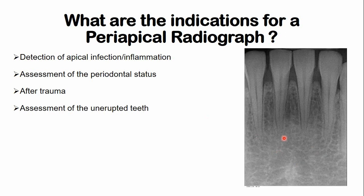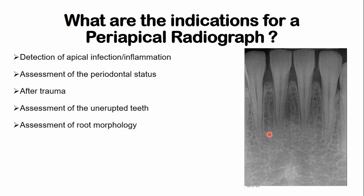Sometimes there are unerupted teeth within the bone, so it is also used for the initial assessment of unerupted teeth. Assessment of root morphology — for example, the number of additional roots or any abrupt curvatures within the root can be identified.